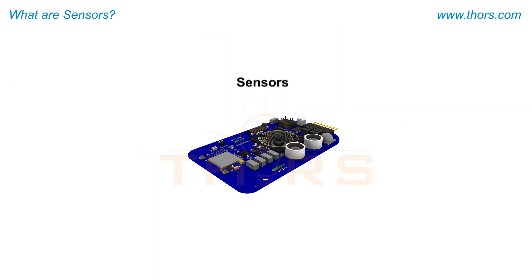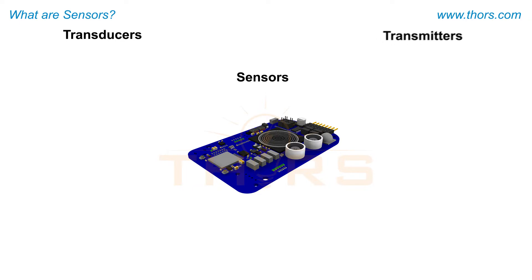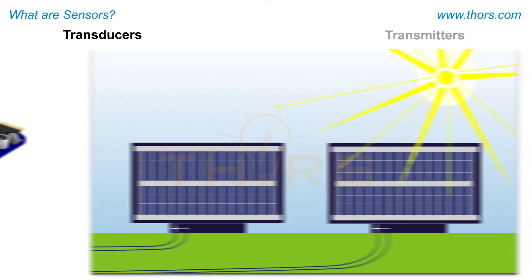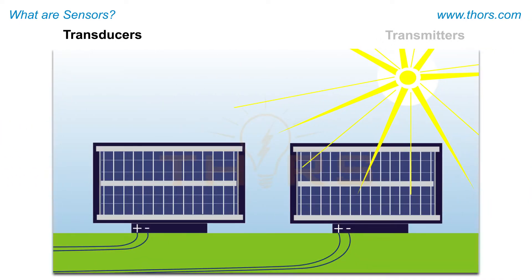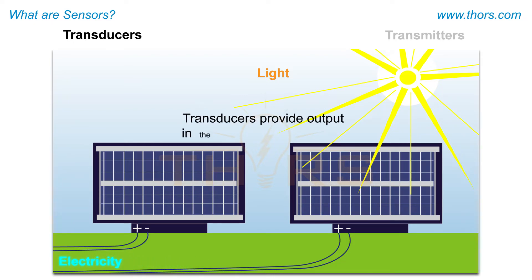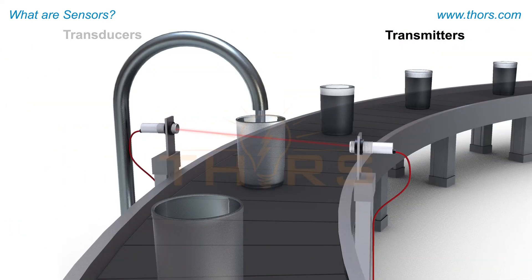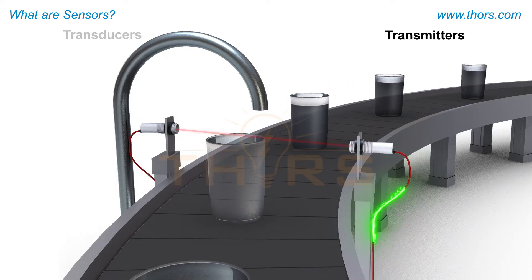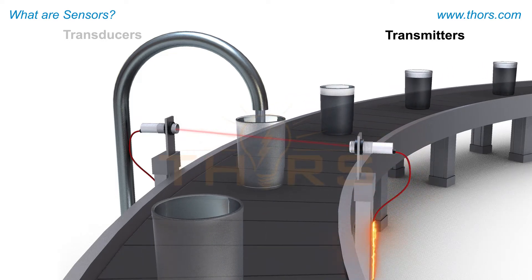Sensors can be used interchangeably with transducers and transmitters. Transducers are energy conversion devices that translate one form of energy encountered in the operation of a system into another form that can be recorded or used as a control input. Transducers provide output in the form of signal energy. Transmitters are commonly used to describe transducers that are adapted to transmit process information over long distances.